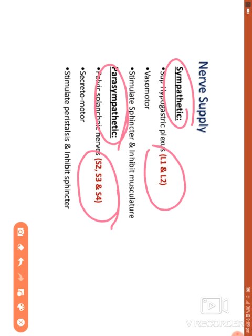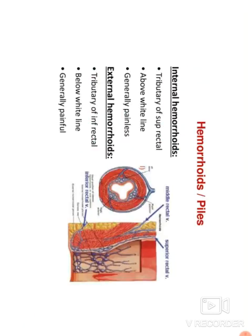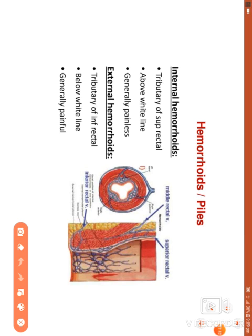For applied anatomy: hemorrhoids or piles can form as two types — internal hemorrhoids (internal piles) and external hemorrhoids (external piles). The internal rectal venous plexus lies in the submucosa, while the external rectal venous plexus lies outside the muscular part of the anal canal.